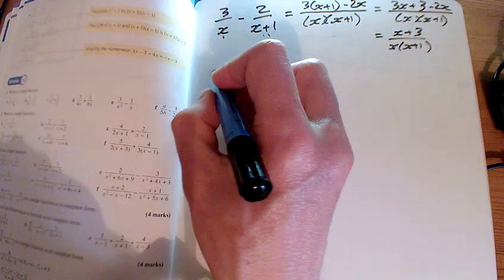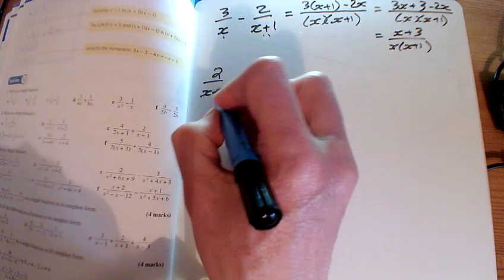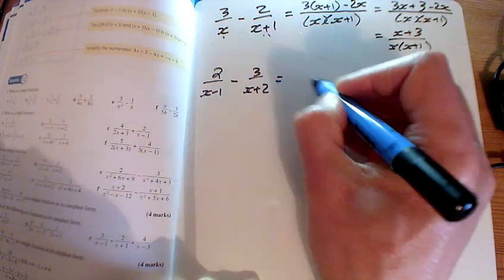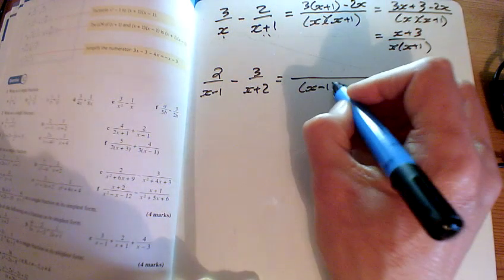The second one is going to be similar. I've got 2 over x minus 1, take away 3 over x plus 2. The common denominator here are these two things times together.